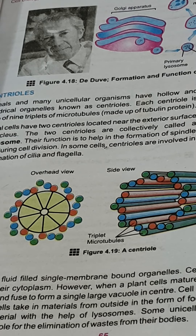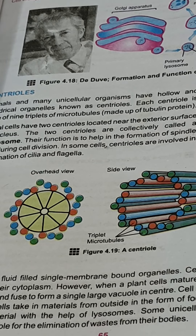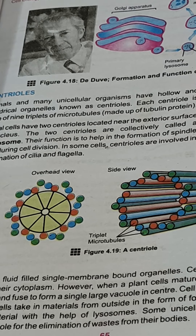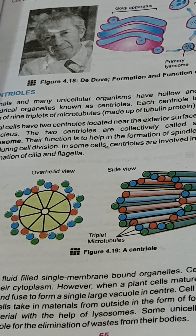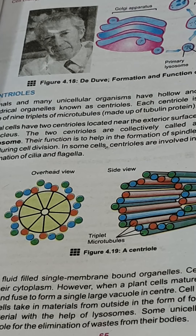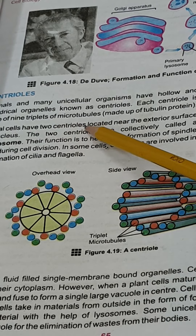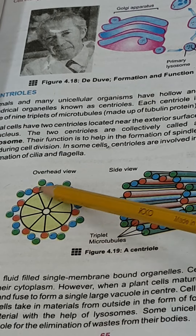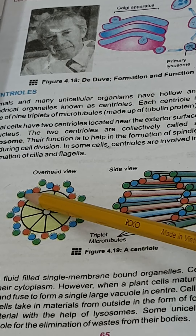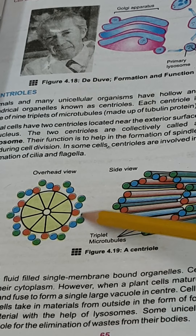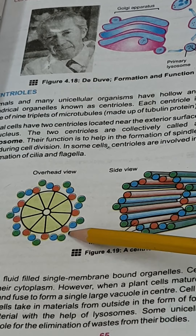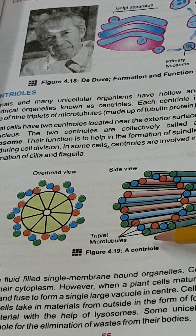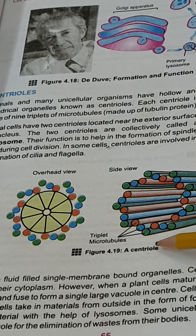The next organelle is the centriole, which is present only in the animal cell and is absent from the plant cell. The centriole is made up of a special protein known as tubulin protein, which combines to form the structure of microtubules. Microtubules are cylindrical structures that combine to form the centriole. One centriole is made up of nine microtubule triplets. In animal cells, two centrioles are present and together they are known as the centrosome.